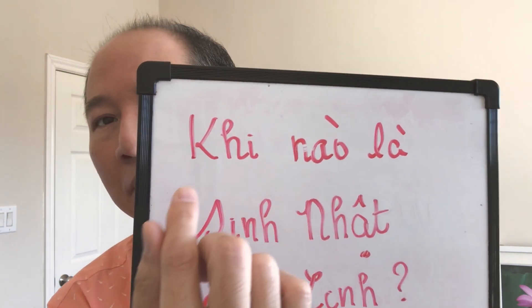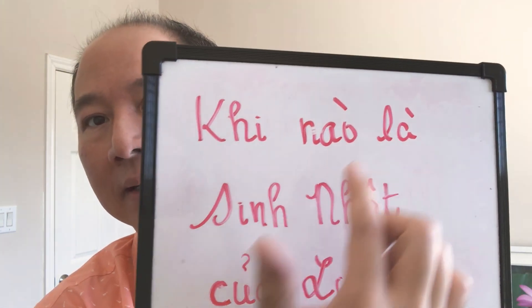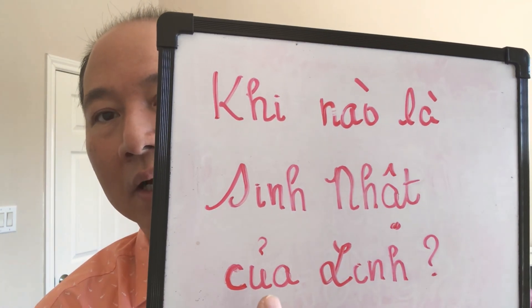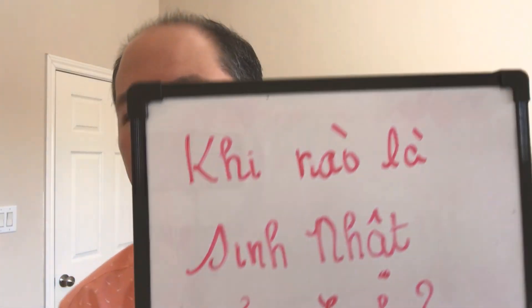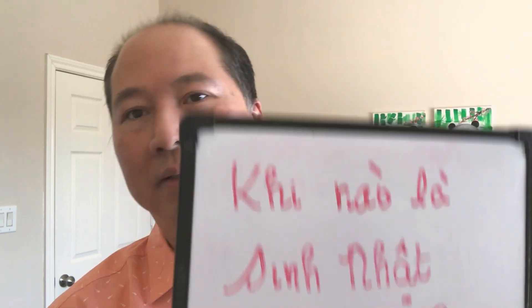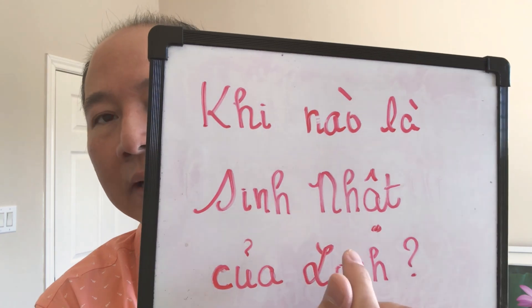So let me repeat this again several times. Khi nào — that means 'when.' Khi nào, là, sinh nhật — this is 'birthday' — cua, Linh — 'of Linh.' So if you were to translate this literally it sounds very choppy, but what it means is: when is the birthday of Linh. Because in Vietnamese there's really no concept of possessive as we have in English, so it's usually translated as 'when is something of somebody else.' So again: khi nào, là, sinh nhật, cua, Linh.